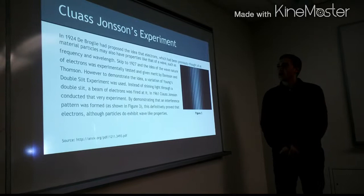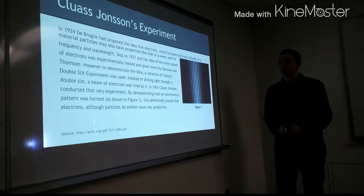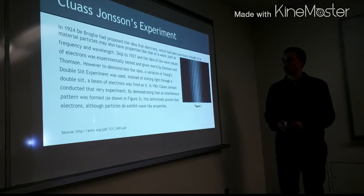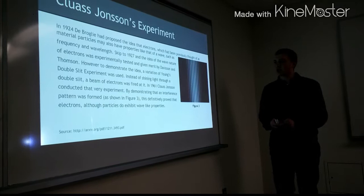Next we have Klaus Johnson's experiment. In 1924, De Broglie had proposed the idea that electrons, which had been previously thought of as material particles, may also have properties like that of a wave. These properties can be thought of as frequency and wavelength. Skip to 1927, and the idea of the wave nature of electrons was experimentally tested and given merit by Davison and Thompson.